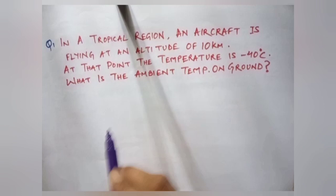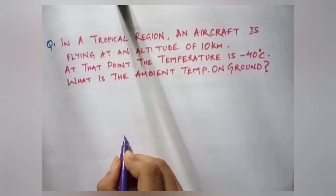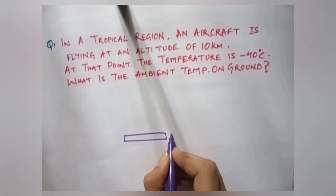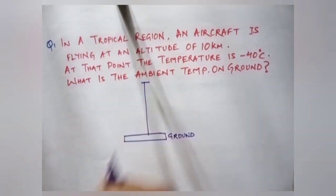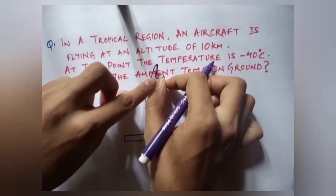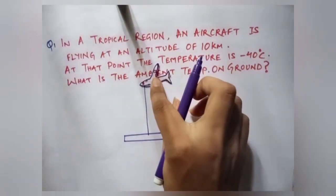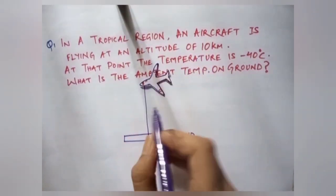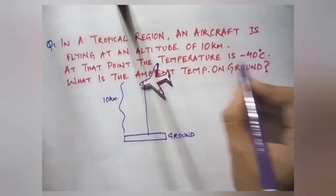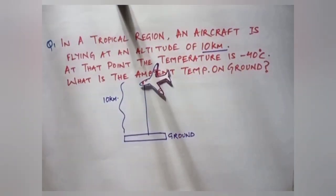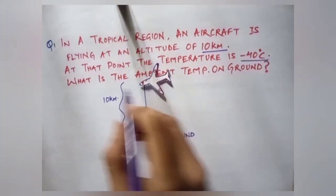As we can see here, the ambient temperature on ground we have to find out. Let us assume this is the ground. And the aircraft is flying at the altitude of 10 kilometer. So here comes our flight and the distance between the ground and the aircraft is 10 kilometer, as it is given in this question already.